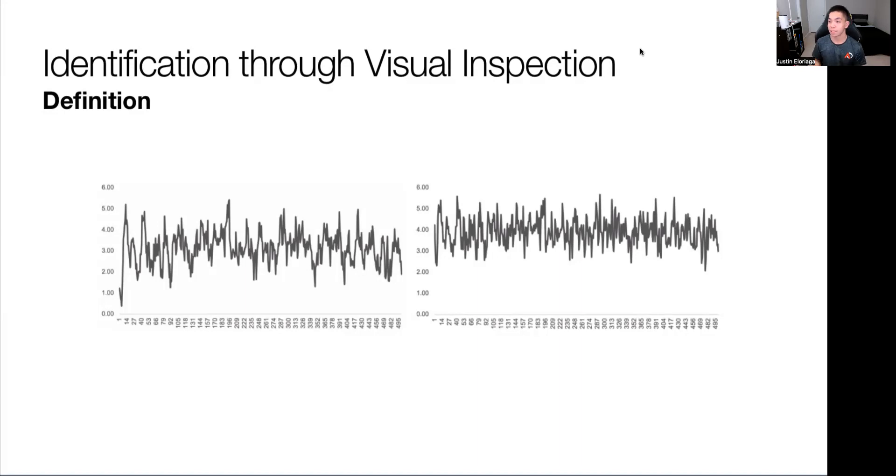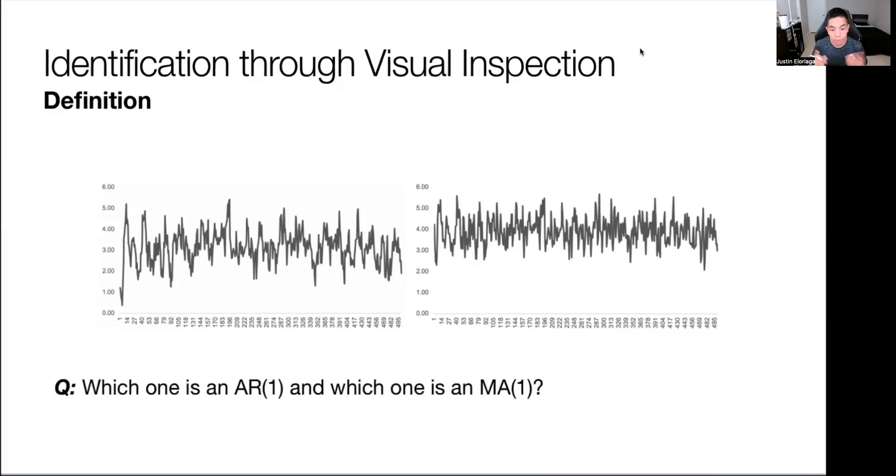While it's the simplest, it's not necessarily the most guaranteed way to identify a model. Consider these two figures, the figure on the left and the figure on the right. We discussed in the past module what the moving average process is and what the autoregressive process is. What if I ask you which one is an AR(1) and which one is an MA(1)? Just by looking at the graph itself you'd be hard-pressed to tell which one is which. You would be guessing, at least I would be guessing in this scenario.